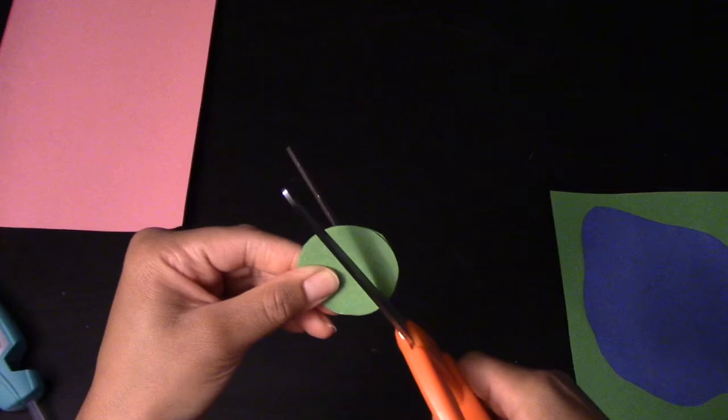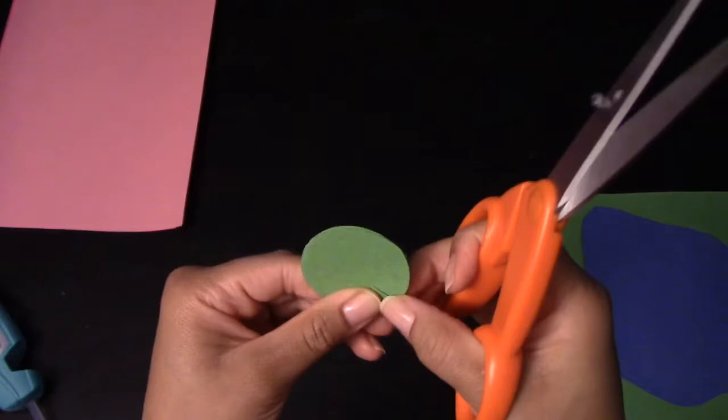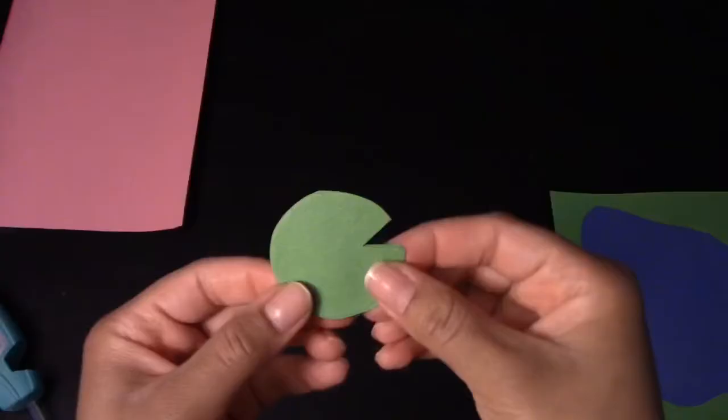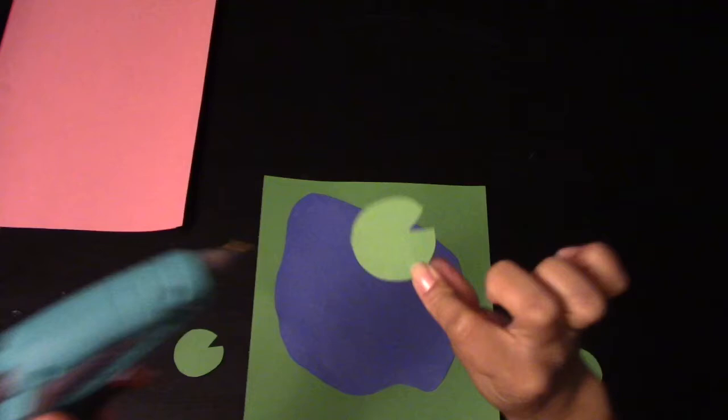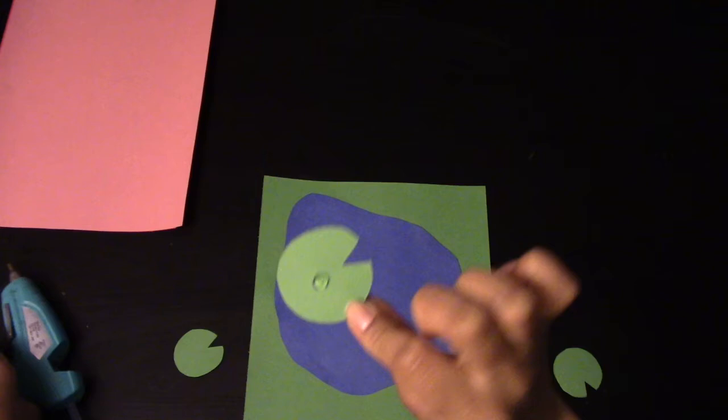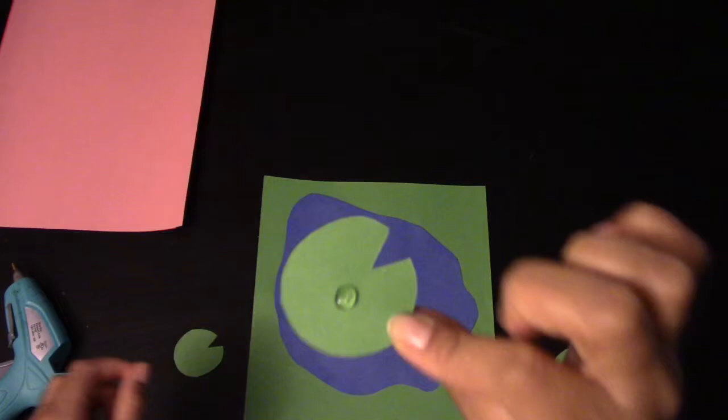Next, take your scissors and cut a slice out of those green circles. It should look like a Pac-Man with a little mouth. Next you're going to take your hot glue and glue a small dot onto the lily pad. It's important that you only do a dot, don't glue the entire thing, because we're going to have this lily pad come up off of the water so that it gives a 3D effect.